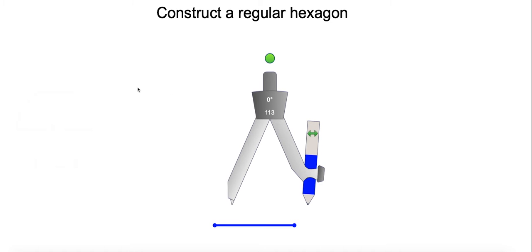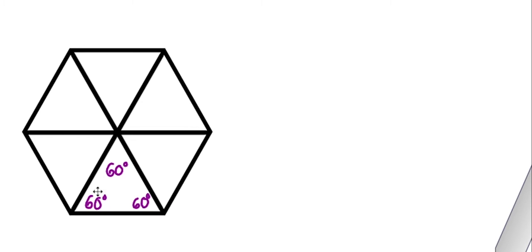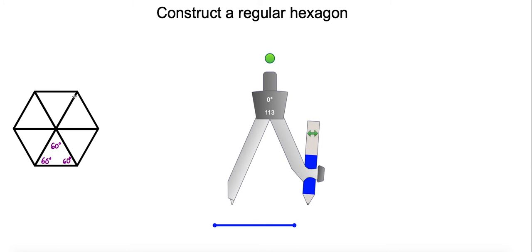A little background on what we're actually constructing. A regular hexagon is made up of six equilateral triangles. So we're going to make use of that fact when we construct it. The main idea we want to keep in mind is we're essentially constructing six equilateral triangles and that's going to help us construct a regular hexagon, this six-sided figure.